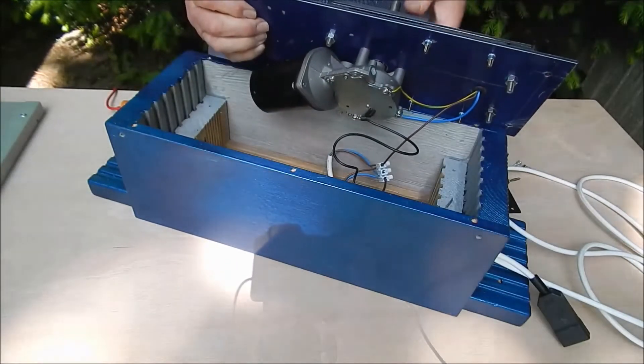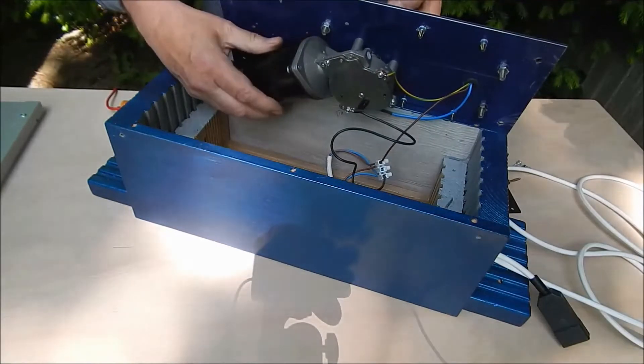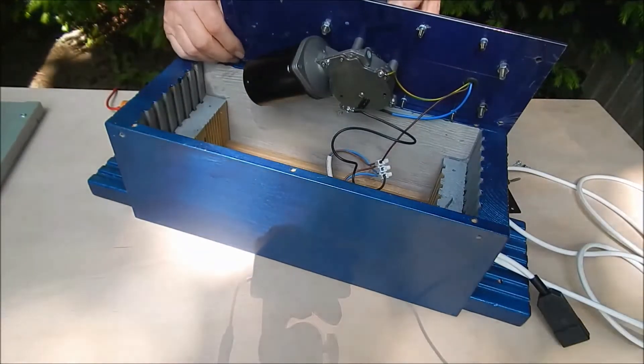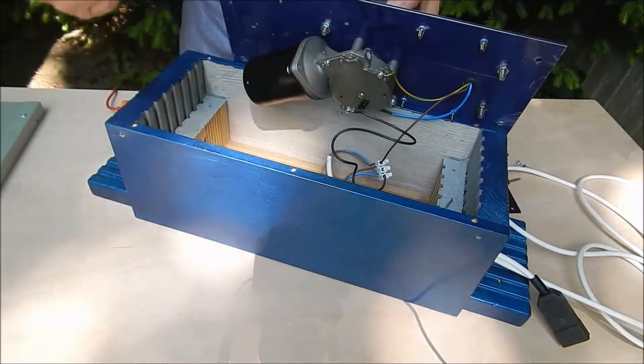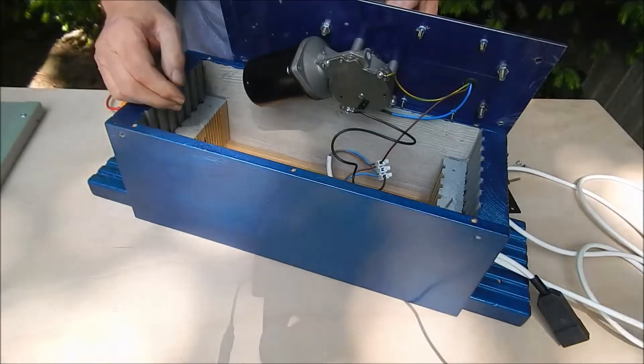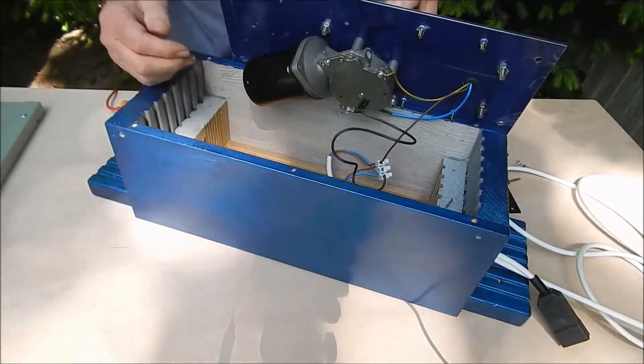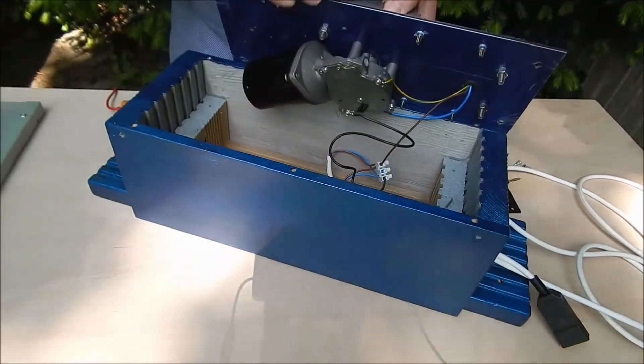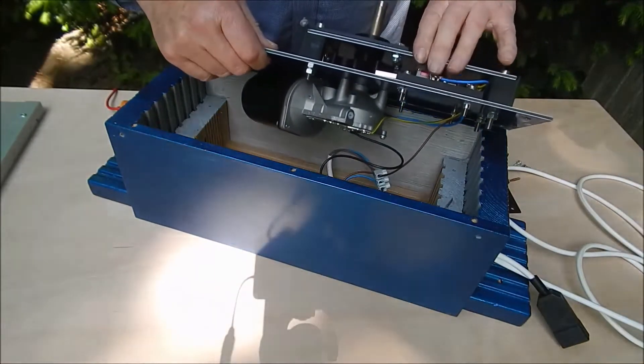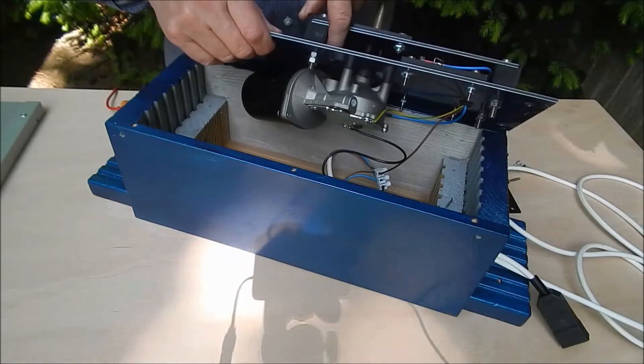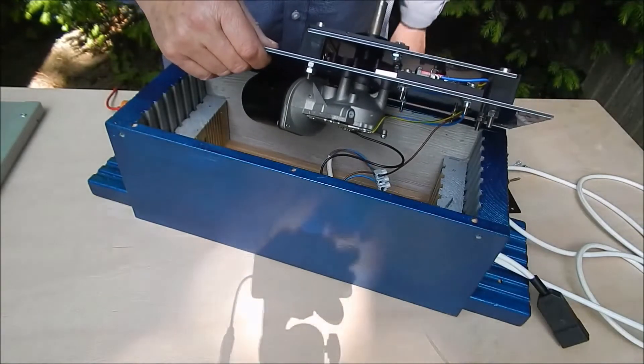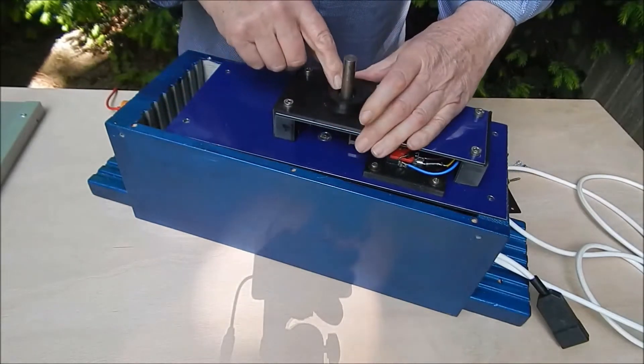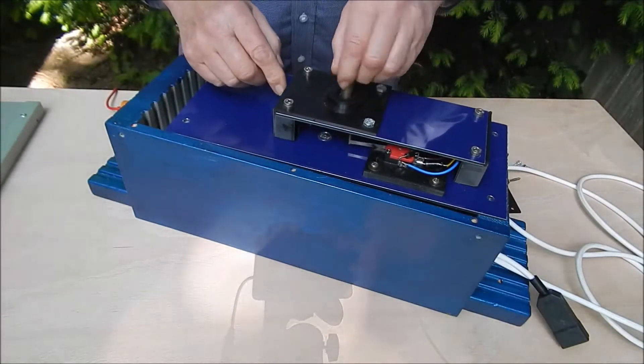Inside here we've got a new windscreen wiper motor. You'll see on some of these turning target systems they use a model aeroplane servo motor but they're really not man enough to turn heavy duty targets. So we've got a windscreen wiper motor there. We've got the switching mechanism here with the cams. We've got a detent here so it clicks into place at the 90 degree angle and it's supported by a bearing on the top there with a 12 millimeter shaft.